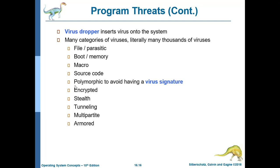Source code viruses look for source code and modify it to include and spread the virus. Polymorphic viruses change themselves from one form to another to avoid virus signature detection — a virus signature is a pattern of bytes used to identify a virus. Encrypted viruses include decryption code along with the encrypted virus to avoid detection.